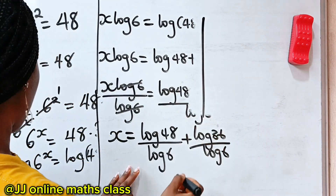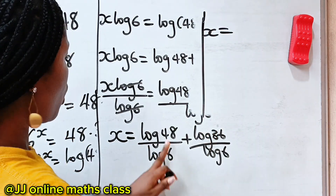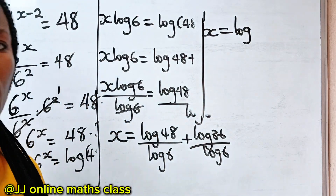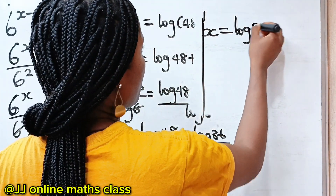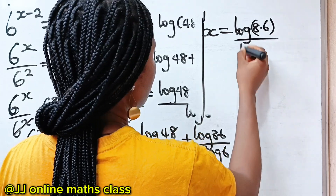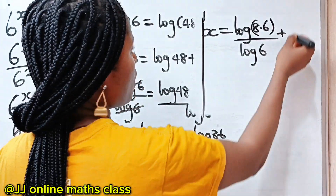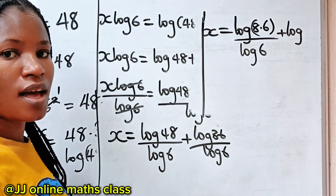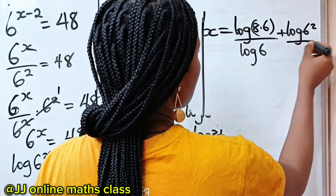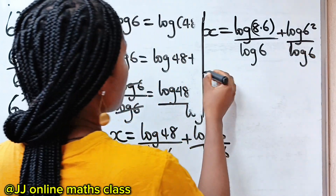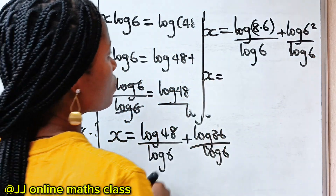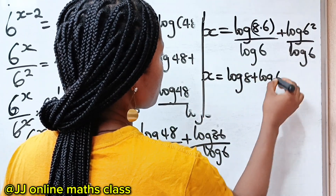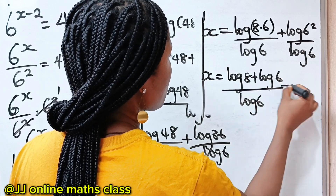Now from here, we can see that log 48 can be expressed as log of 8 multiplied by 6, giving us log(8×6) divided by log 6. And 36 is the same thing as 6 squared, so we have log 6 squared divided by log 6.